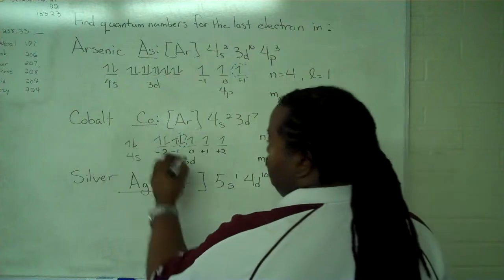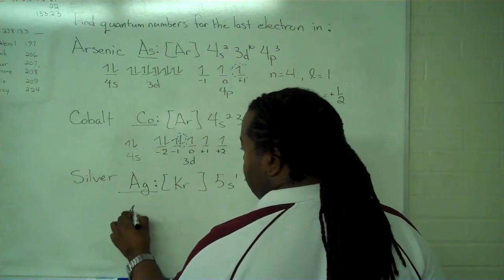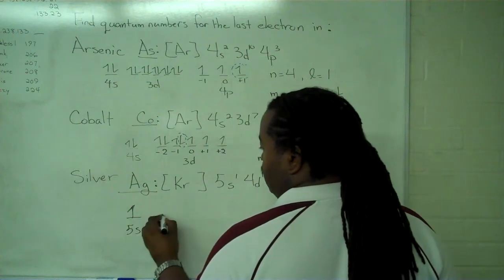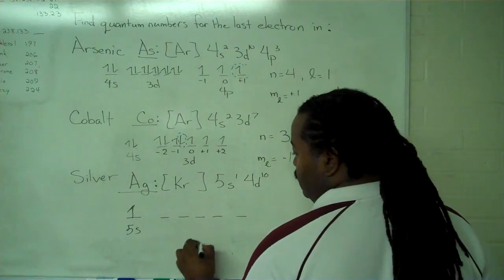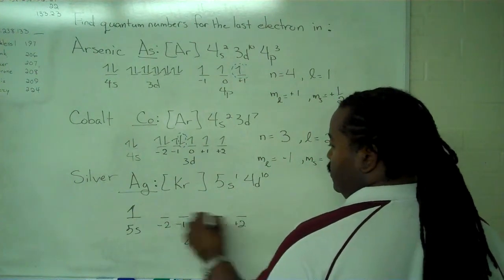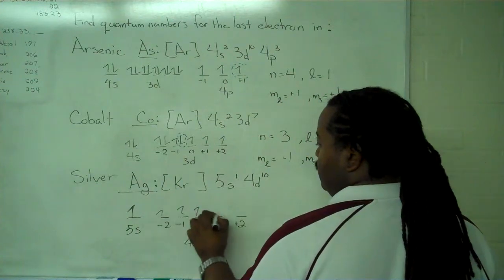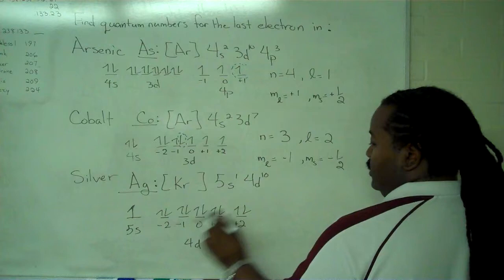Once we have that, we can draw our occupancy diagram, 5s1, and our 4d, labeling the orbitals. 1, 2, 3, 4, 5, 6, 7, 8, 9, 10.